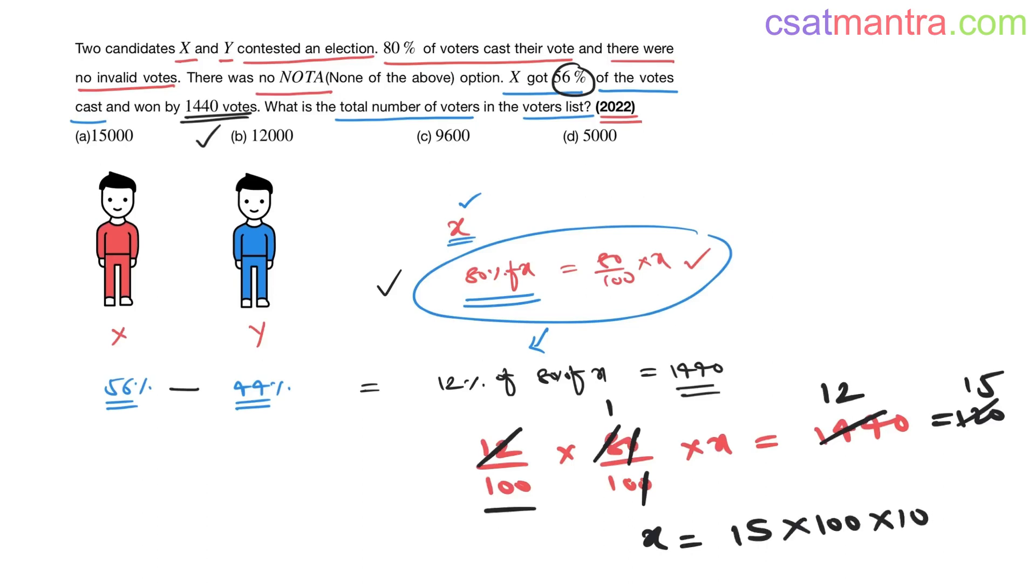This is 15,000. Answer is A. They will give the values in such a way that somehow they will be cancelled by some number. Here 144, 12, 12s, you're getting 120. Again this would be cancelled by 8. So this is how you have to look for simplification.